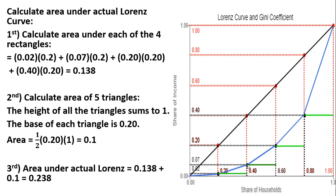The area of the second rectangle, a little bit easier to see, is going to be 0.2 times the width here, 0.07. Moving on to the next rectangle, it's 0.2 times 0.2. And our last rectangle is going to be 0.2 times 0.4. So doing the math here, the area of all these rectangles, these four rectangles, equals 0.138.